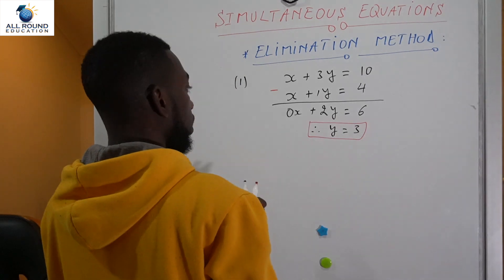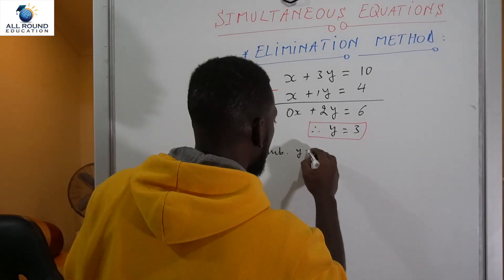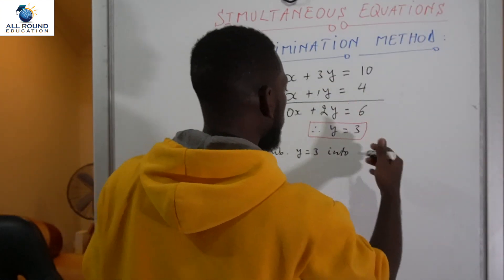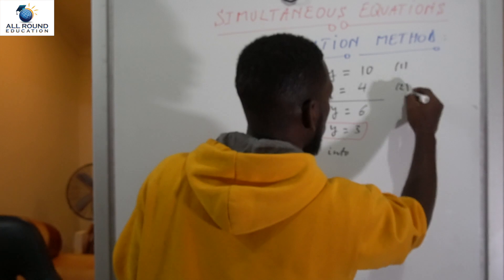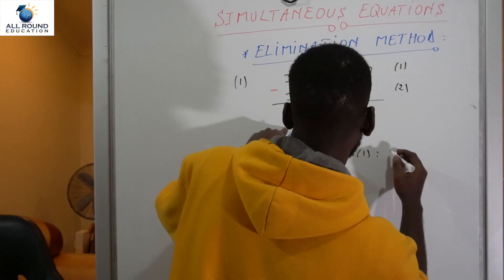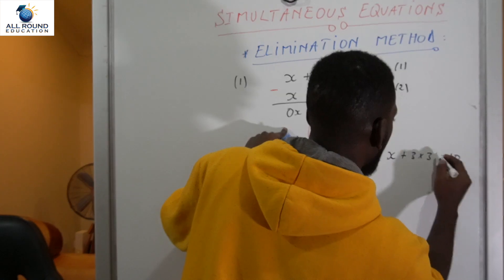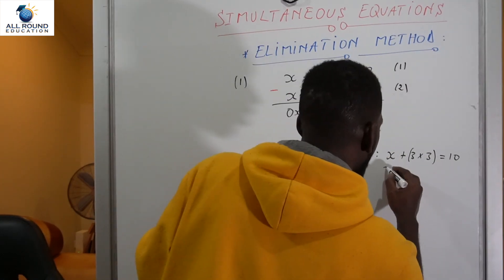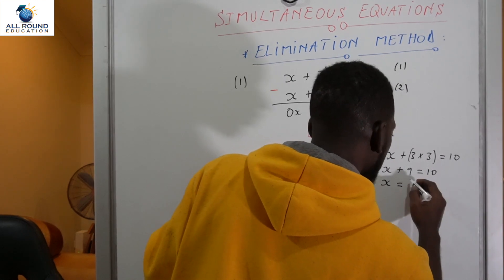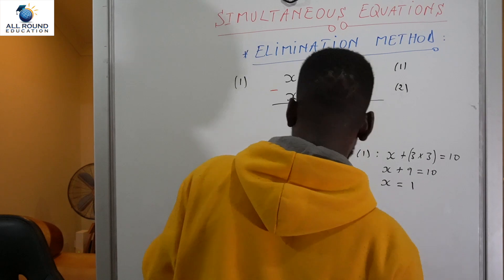Now that we have y equals 3, we can substitute this value into one of the original equations. Let's substitute into equation one. That gives us x plus 3 times 3 equals 10, which is x plus 9 equals 10. Subtracting 9 from both sides gives us 10 minus 9, so x equals 1.